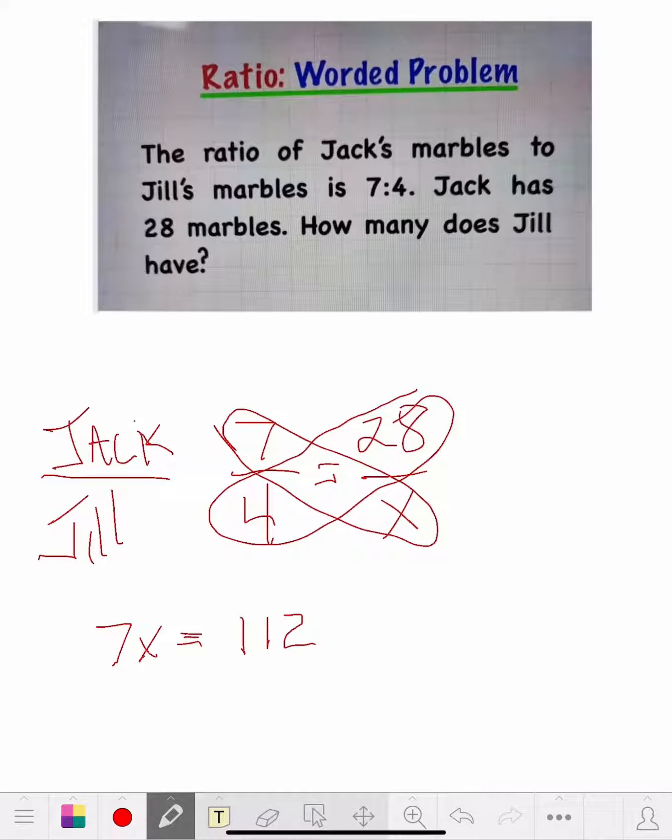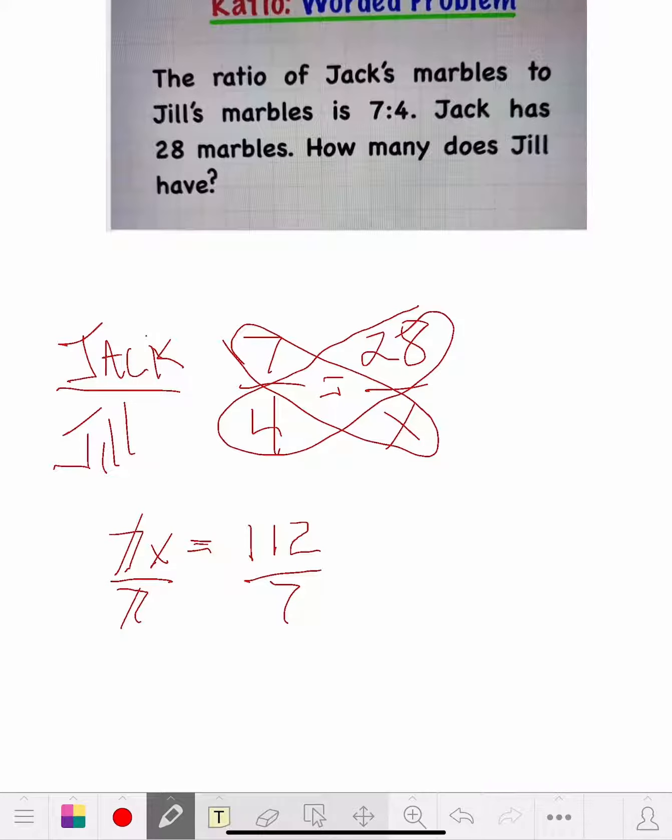But now we got to get the X by itself. So what we're going to do is, it's seven times X, so the inverse of times is division. So we divide both sides by seven. So these two sevens cross each other out. So we're going to have X equals 112 divided by seven, 16.